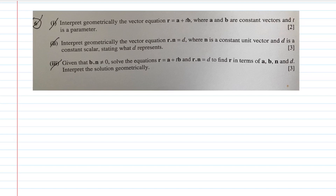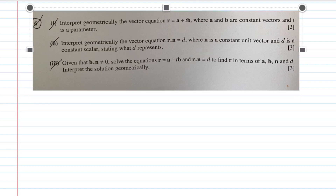Welcome back to A Level Lessons Online. We're back with question six of our 2017 Paper One — H2 Math. We're going to be looking at this question on vectors. Vectors is a chapter that many students tend to struggle with, but this question really isn't that hard. It may look a bit intimidating, but it's actually quite easy once you start solving it. Part one asks you to interpret geometrically the vector equation r equals a plus tb, where a and b are constant vectors and t is a parameter.